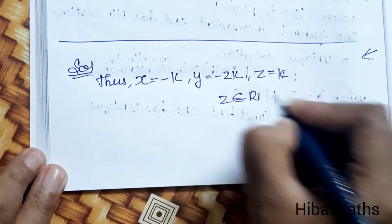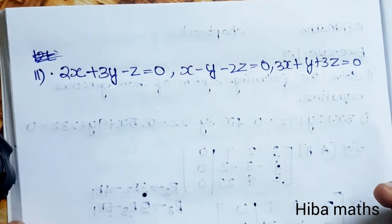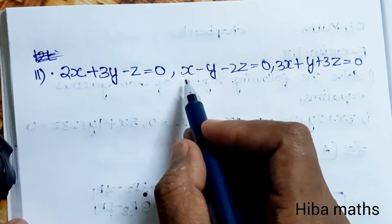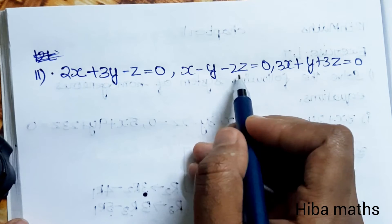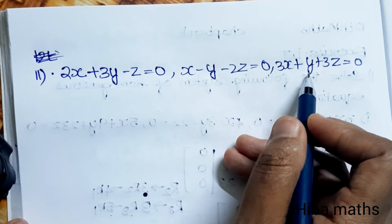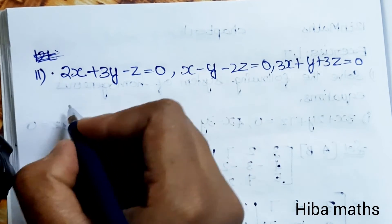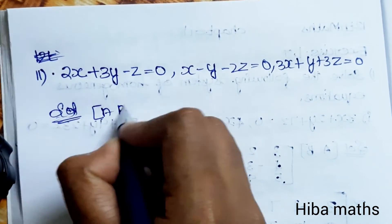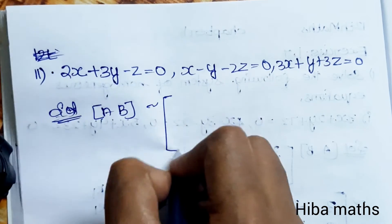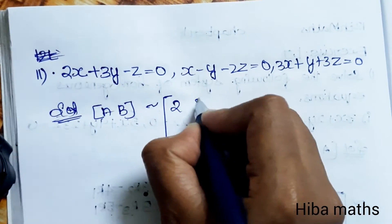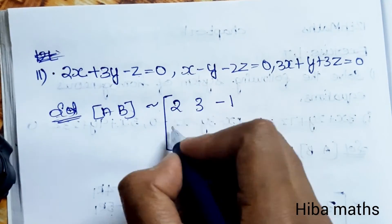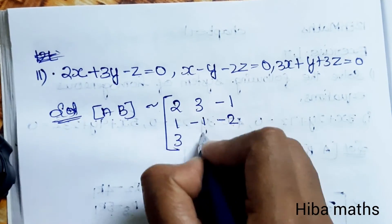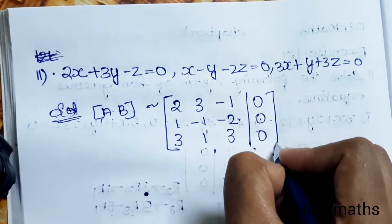Second subdivision: 2x + 3y - z = 0; x - y - 2z = 0; 3x + y + 3z = 0. For the solution, we write the augmented matrix: row 1: 2, 3, -1, 0; row 2: 1, -1, -2, 0; row 3: 3, 1, 3, 0. Since the first column of row 2 is 1, we interchange R1 and R2.